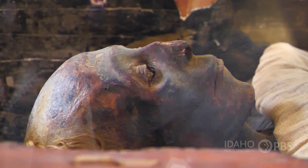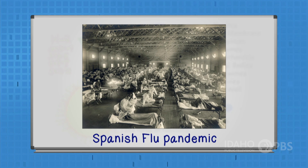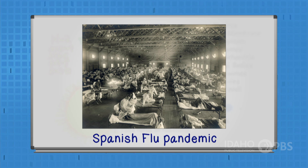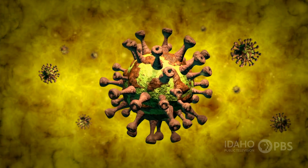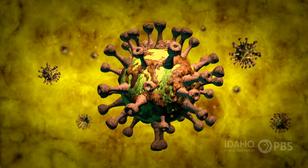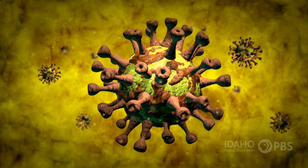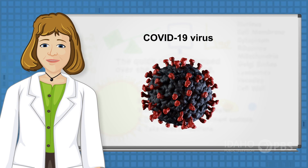Scientists have found evidence of virus-caused illnesses in the mummies of ancient Egypt. A flu pandemic in 1918 to 1920 infected about a third of all the people on Earth and killed 20 to 50 million people. A new virus showed up in late 2019 or early 2020 called Severe Acute Respiratory Syndrome Coronavirus 2. It causes the disease COVID-19.